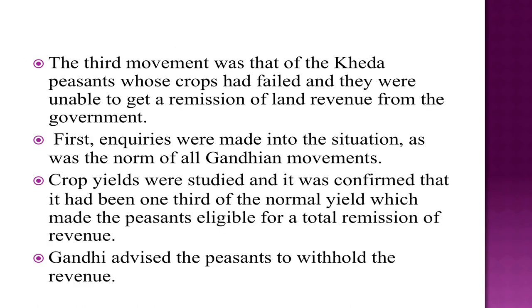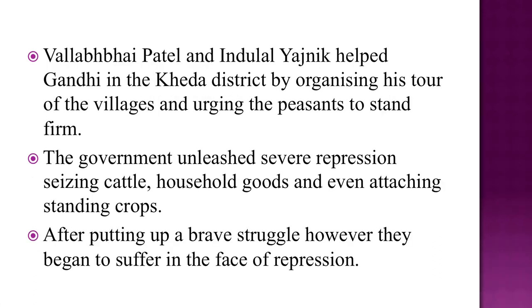The third movement was that of the Kheda peasants, whose crops had failed and who were unable to get a remission of land revenue from the government. Inquiries were made into the situation, as was the norm of all Gandhian movements. Crop yields were studied and it was confirmed that the yield had been one-third of normal, making the peasants eligible for a total revision of revenue. Gandhiji advised the peasants to withhold the revenue. Vallabhbhai Patel and Indulal Yajnik helped Gandhi in the Kheda district by organizing his tour of the villages and urging the peasants to stay firm.